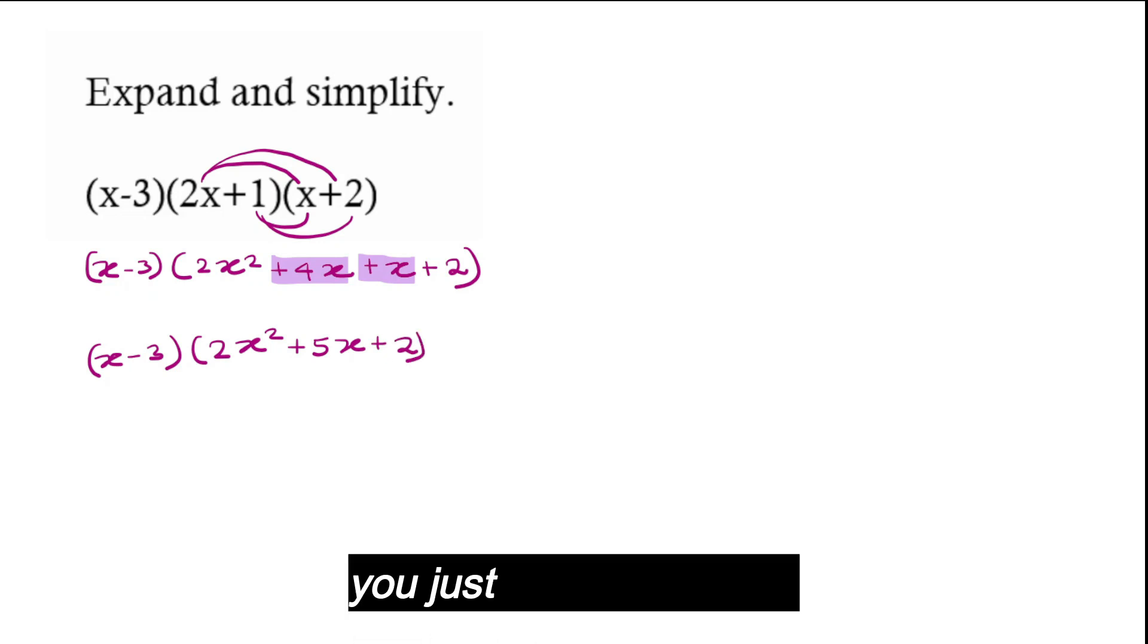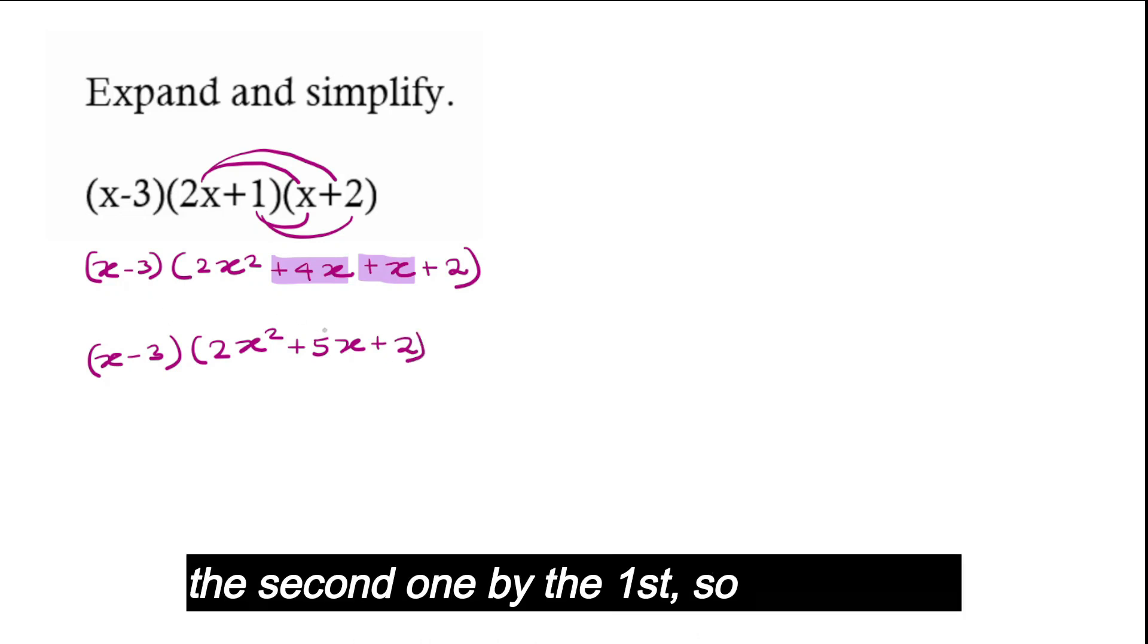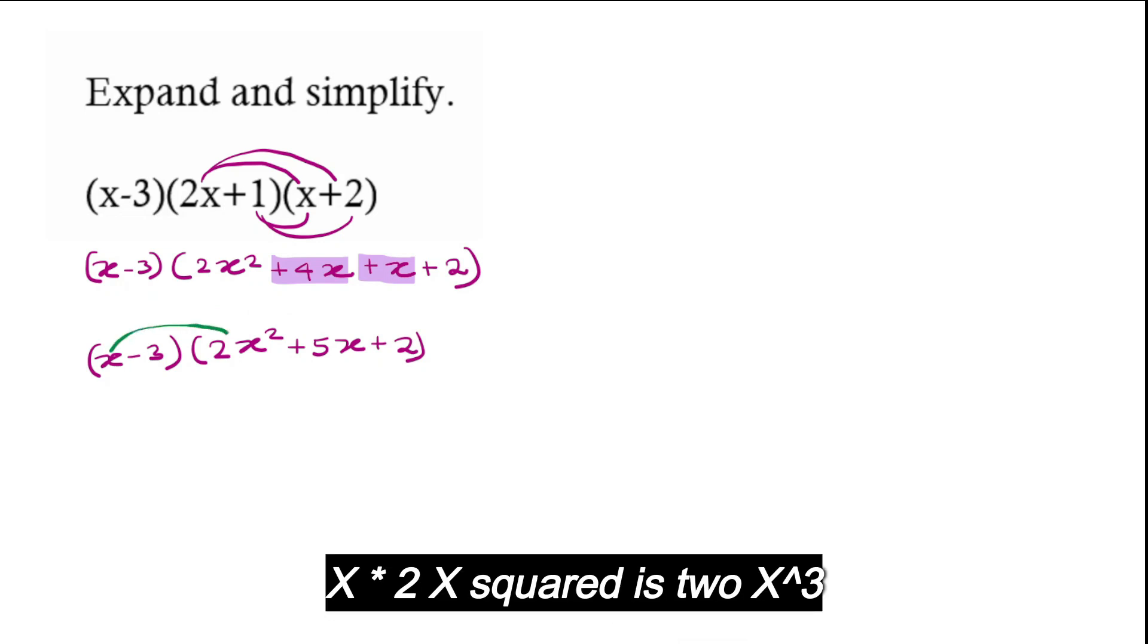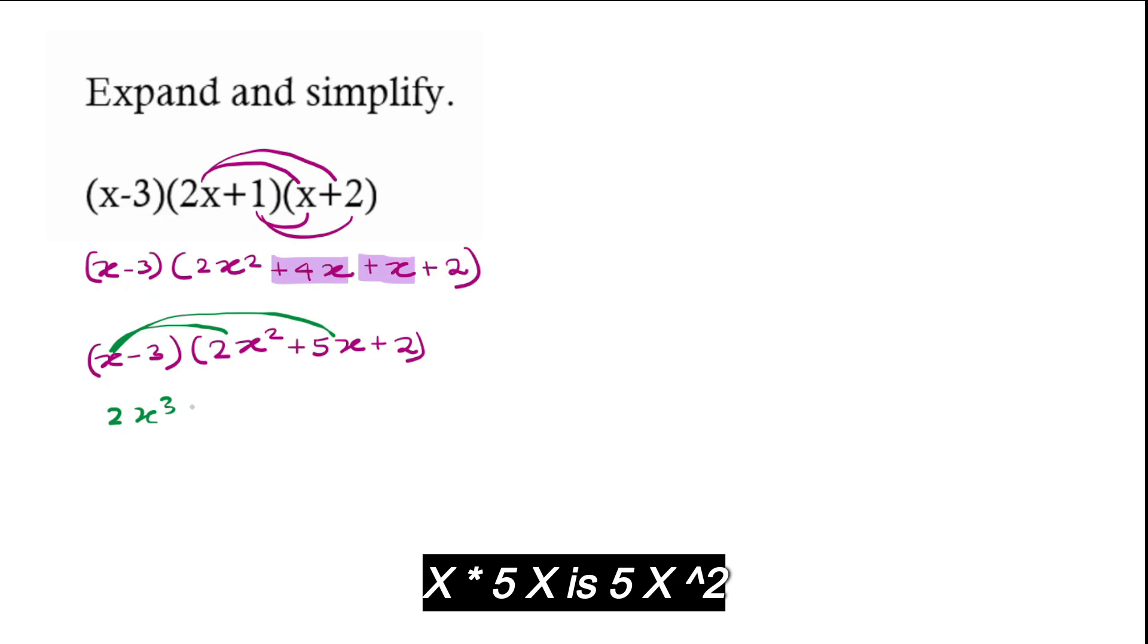Now you just need to multiply the second one by the first. So let's do that one at a time. x times 2x squared is 2x cubed. x times 5x is 5x squared. x times 2 is 2x.